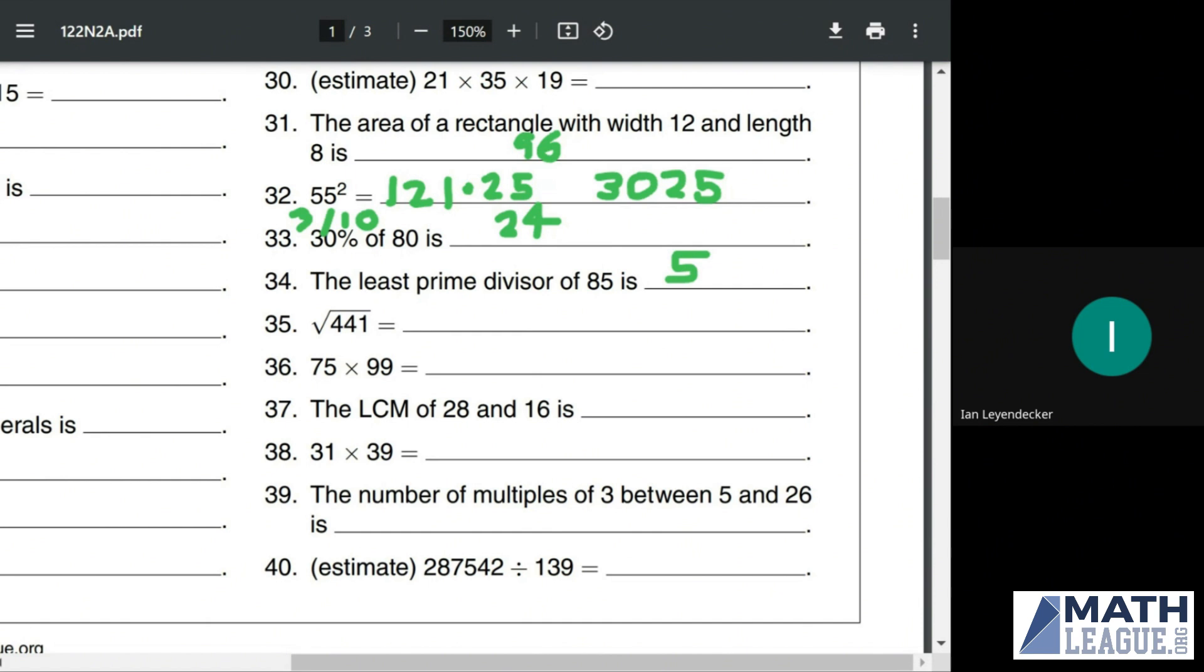Square root of 441, again, you should have your squares memorized up to 30. So if you do, you should also be able to remember the square root of those perfect squares, in which case you will know that 441 is the square of 21. So 21 is the square root.